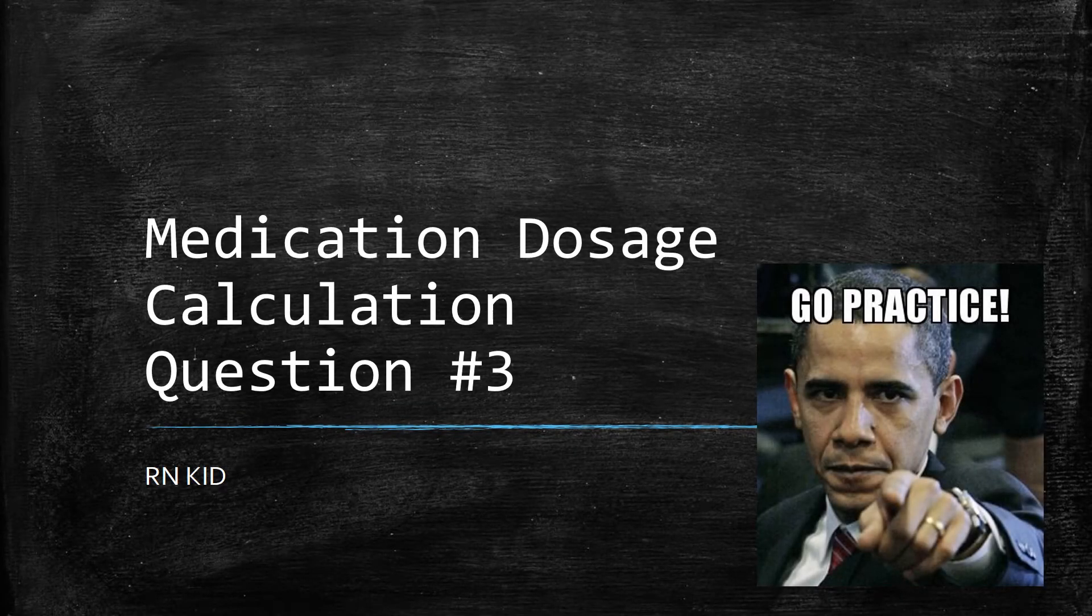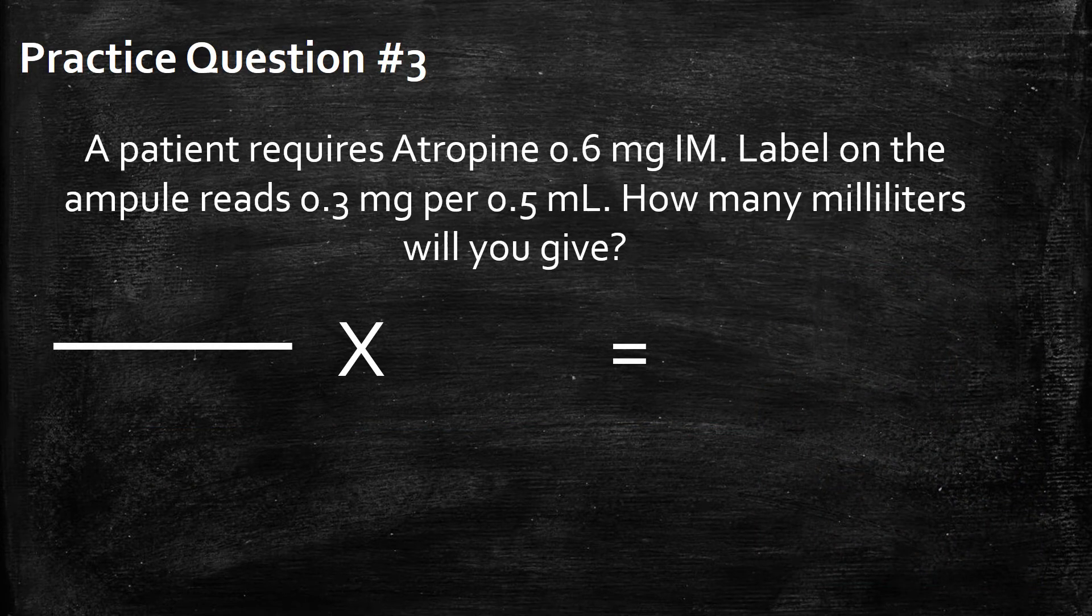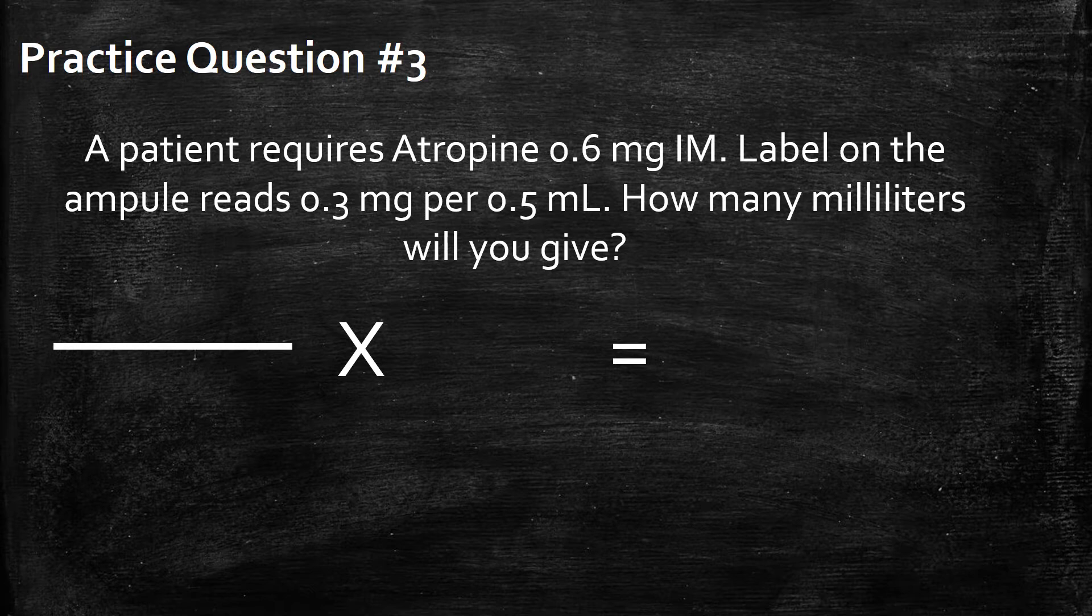Medication dosage calculation question number three. A patient requires atropine 0.6 milligrams IM. The label on the ampoule reads 0.3 milligrams per 0.5 milliliters. How many milliliters will you give?